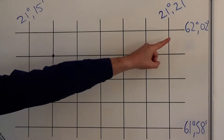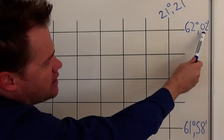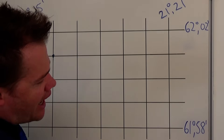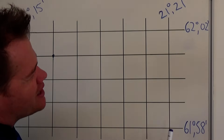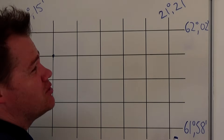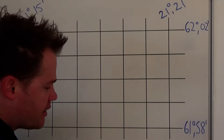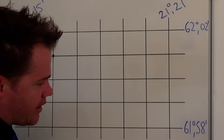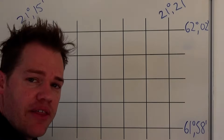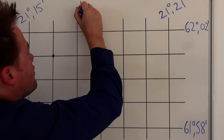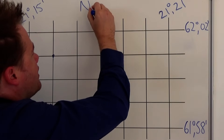If we look at the numbers over here, we see 62 degrees 2 minutes, and here we see 61 degrees 58 minutes. The numbers increase as we move in that direction, which means the equator is down here, south of this specific area. So everything on this map is north of the equator and east of the Greenwich Meridian — very important to remember.